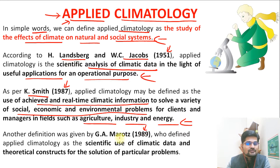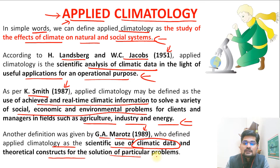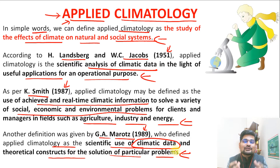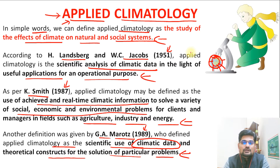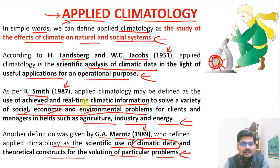Then in 1989, another definition by G.A. Marotz: he defined applied climatology as the scientific use of climatic data and theoretical constructs for solving particular social problems. The basic idea across all these definitions is using the knowledge of climatology to actually solve or mitigate problems in the real world — in social systems — and to apply climatological knowledge to solve real world problems from social, economic, and environmental perspectives.